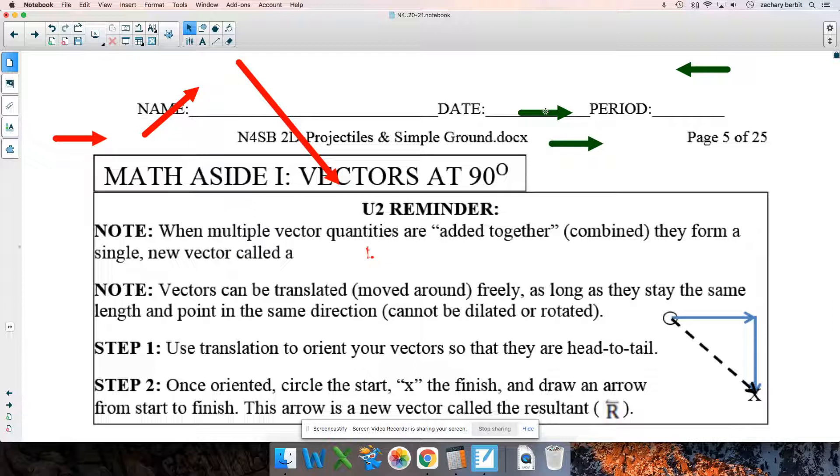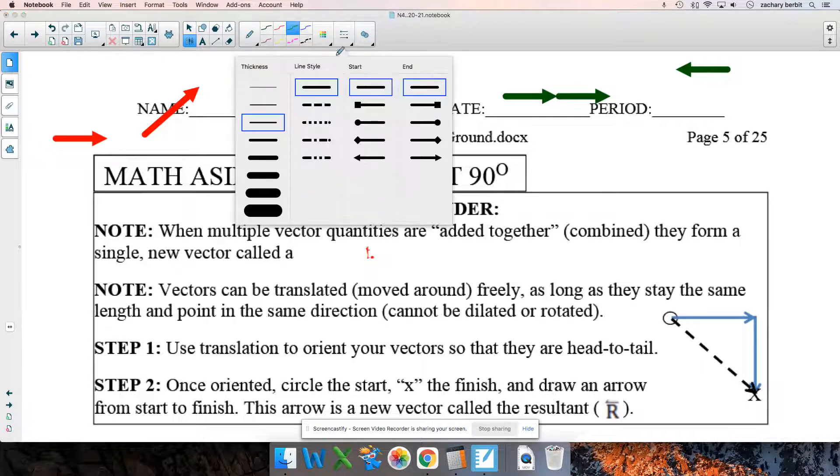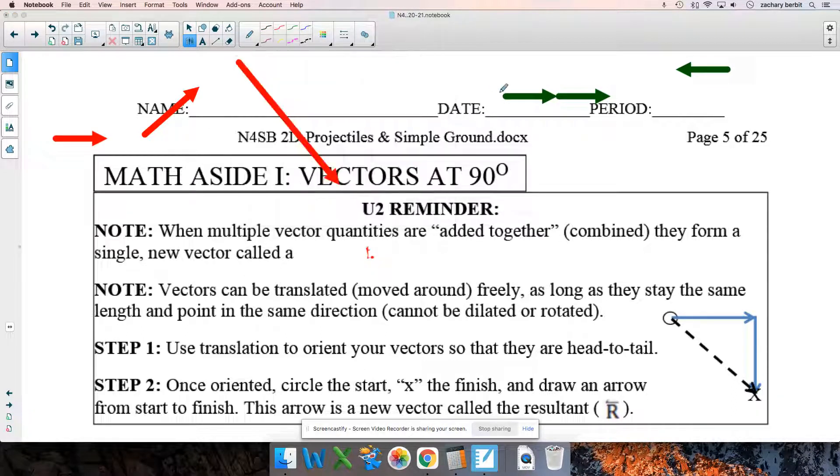We have multiple vectors, kind of like Carl on the people mover at the airport. Carl was going, his legs were bringing him forward, and the people mover was forward. We had to add those together, we made them head to tail, and that gave us a resultant. And the resultant was determined by circling the start, X-ing the finish, and doing the shortcut directly from start to finish, if you remember doing that.